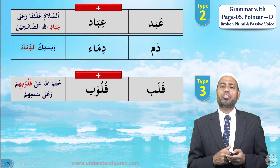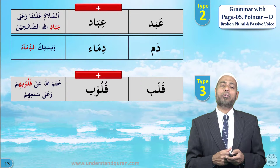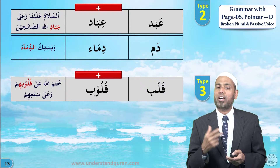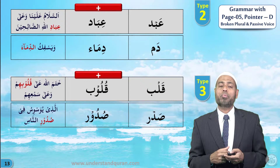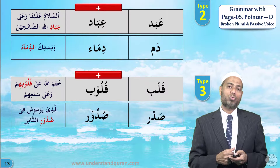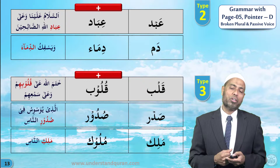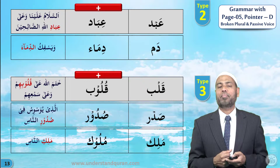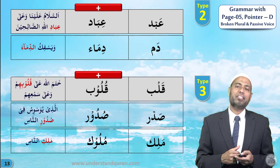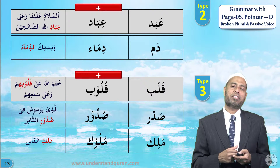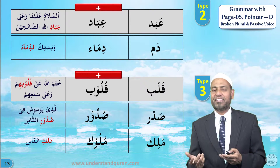Let's take type three. Qalb means heart; plural is qulub — not qilab or aqlab, but qulub. Khatamallahu 'ala qulubihim — Allah has put a seal on their hearts. Sadr means chest; plural is sudur — alladhi yuwaswisu fi suduri n-nas. Malik means king; plural is muluk — malikun-nas.